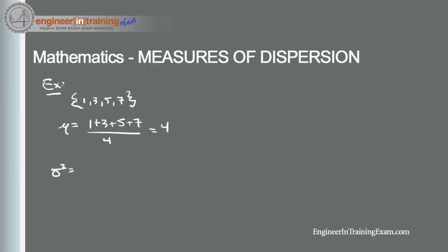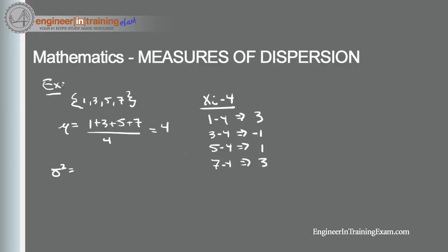We need to determine all the terms (xᵢ minus 4). Our first term is 1 − 4 = −3, second is 3 − 4 = −1, third is 5 − 4 = 1, and last is 7 − 4 = 3. So we compute (−3)² + (−1)² + 1² + 3² divided by four, which gives us a population variance equal to five.